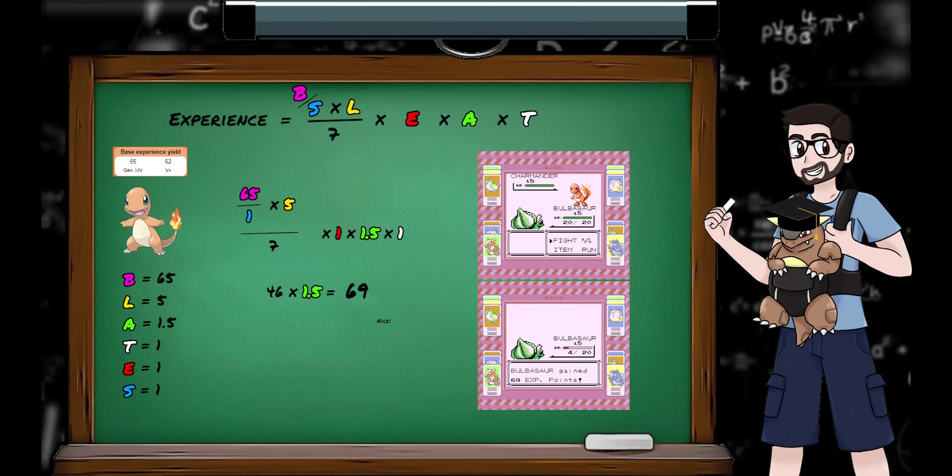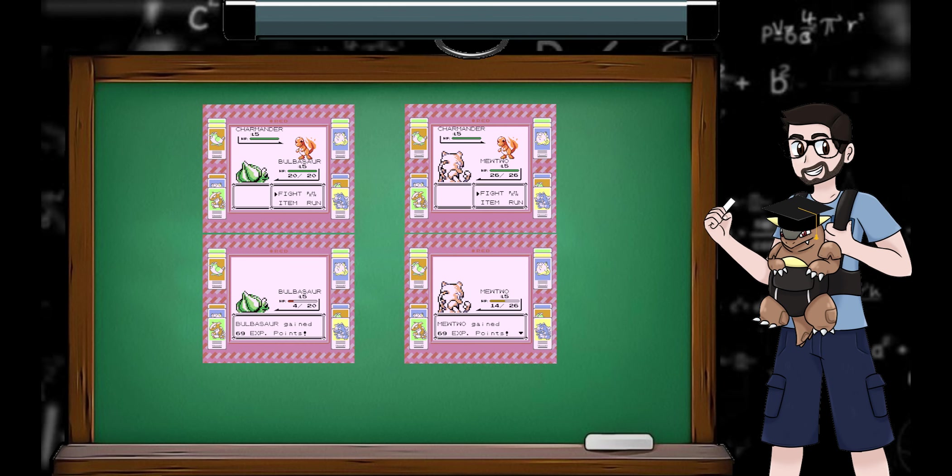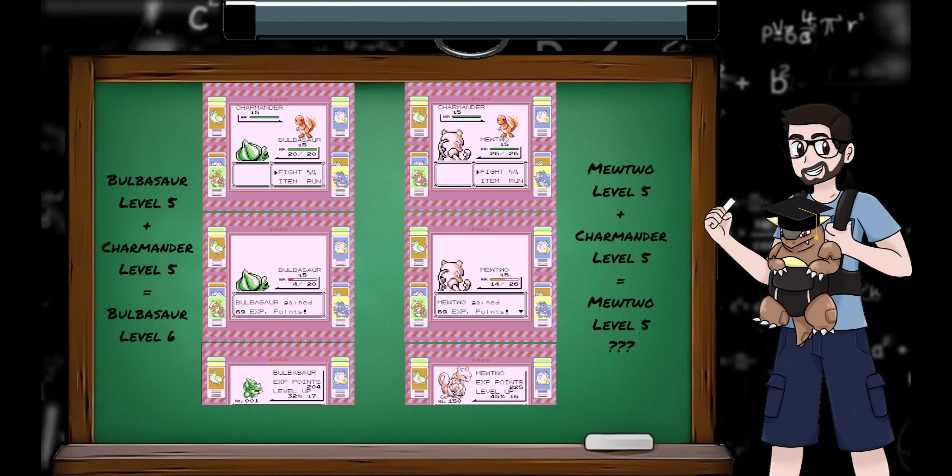Nice. And it'll continue to give us 69 experience regardless of who we start our run with. Both Bulbasaur and Mewtwo will receive 69 experience points after defeating this Charmander. But what's this? Bulbasaur leveled up and Mewtwo didn't? Dun dun dunnnnnnnnnn.